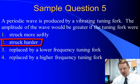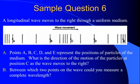Let's try one last sample problem. A longitudinal wave moves to the right through a uniform medium. Points A, B, C, D and E represent the positions of particles of the medium. What is the direction of the motion of the particles at position C as the wave moves to the right? Well, if the wave is moving to the right, that means the particles of the wave must vibrate in the same plane, left and right. So, as the wave moves to the right, C must move to the right and to the left.